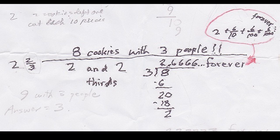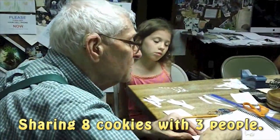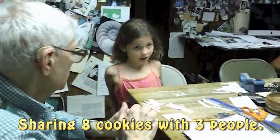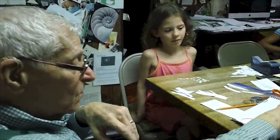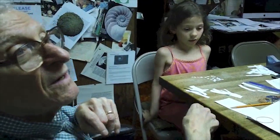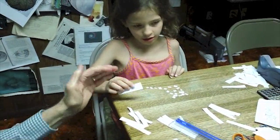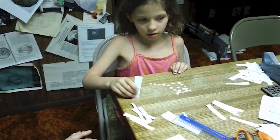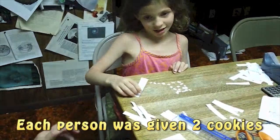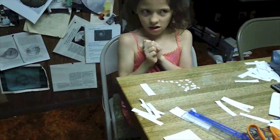We're doing something very exciting — I've never seen this done before. We're sharing eight cookies between three people. Here's the problem: eight cookies with three people, which you had worked on before. She's going to do it here. You're sharing eight cookies between three people, and there were two cookies left over when you shared them. Each person got two cookies, and there were two cookies left over.